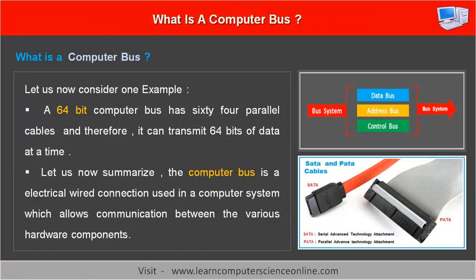For example, a 64-bit computer bus has 64 parallel cables and therefore it can transmit 64 bits of data at a time.